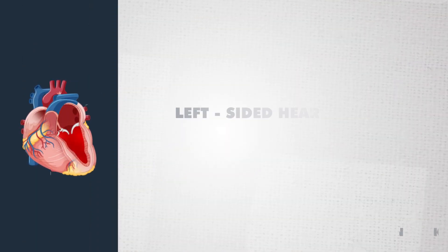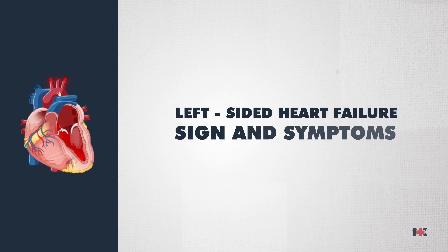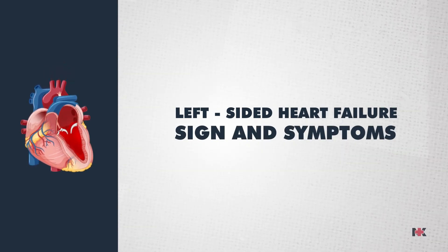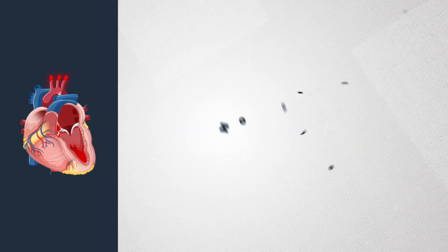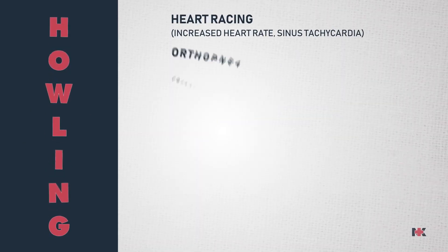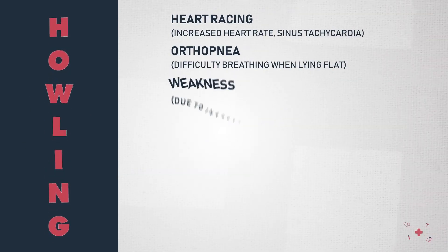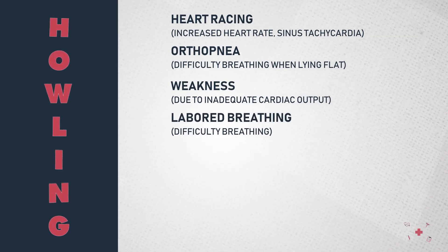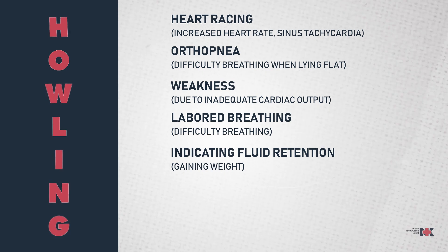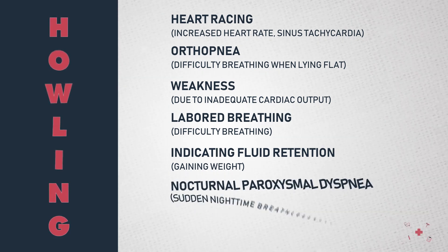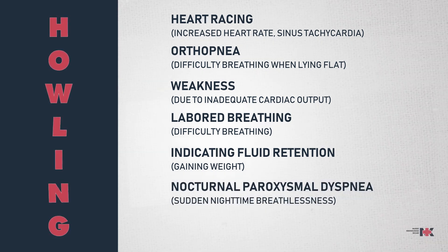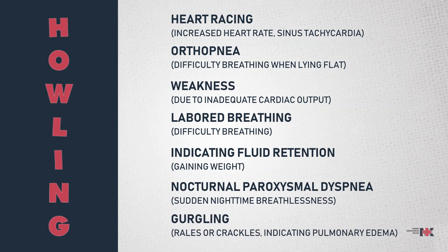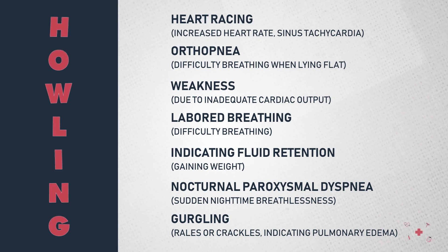An indication of left-sided heart failure is captured in the acronym HOWLING. Because left-sided heart failure primarily affects blood flow between the heart and lungs, remember: H for heart racing; O for orthopnea, or difficulty breathing when laying flat; W for overall weakness due to inadequate cardiac output; L for labored breathing; I for indicating fluid retention such as weight gain; N for nocturnal paroxysmal dyspnea, or sudden nighttime breathlessness; and G for gurgling — you'll hear crackles or rales, again indicating pulmonary edema.